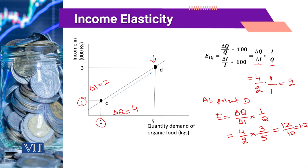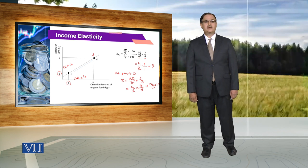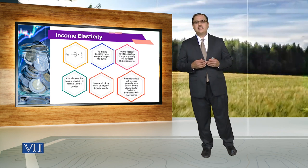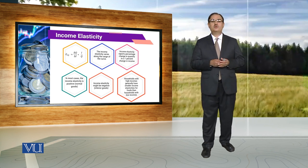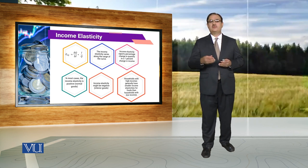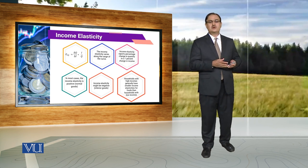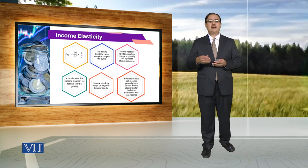It is more elastic at point C while it is less elastic at point D. Just like price elasticity of demand, income elasticity of demand also changes as we move along the curve. So income elasticity varies along the range of the curve — it might be more elastic in one part of the curve compared to another point.